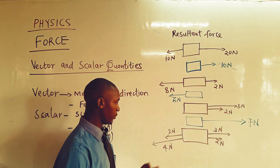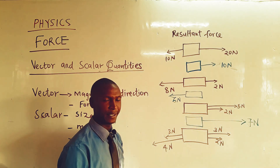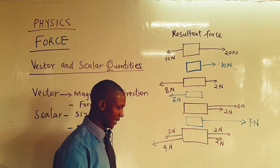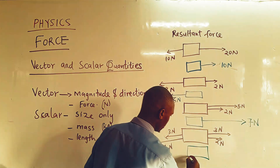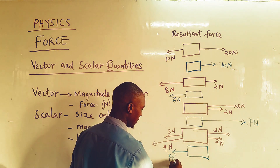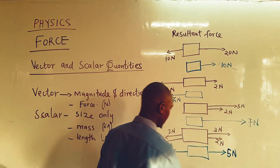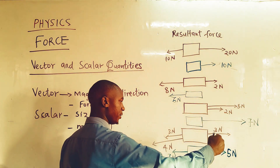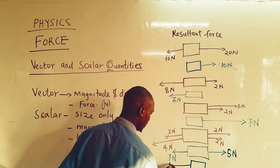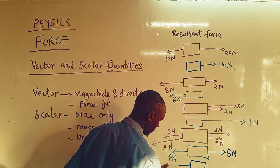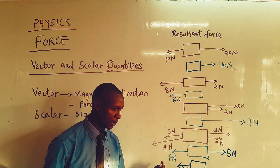In the last example, we have two forces — 3 newtons and 4 newtons — pulling to the left, and two forces — 3 newtons and 2 newtons — moving to the right. Summing the left side gives 7 newtons, and summing the right side gives 5 newtons. The resultant is therefore 2 newtons to the left.